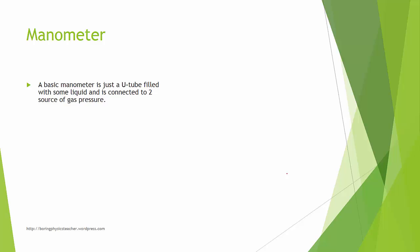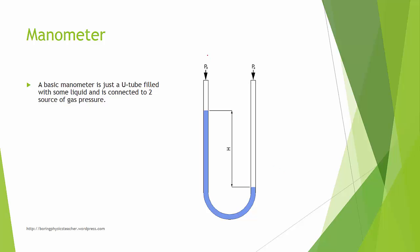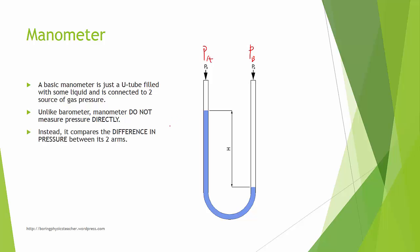A basic manometer is a U-tube filled with some liquid and is connected to two sources of gas pressure, Pa and Pb. Unlike a barometer, a manometer does not measure pressure directly. Instead, it compares the difference between the pressure in the two arms — it finds the difference between Pa and Pb.